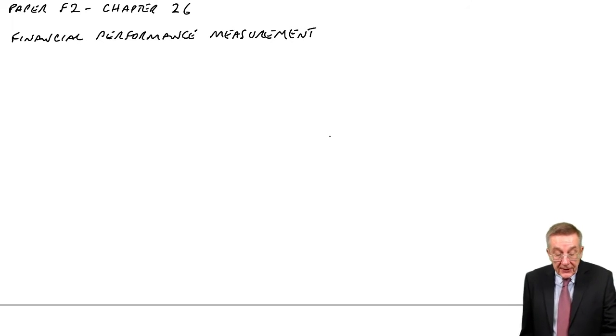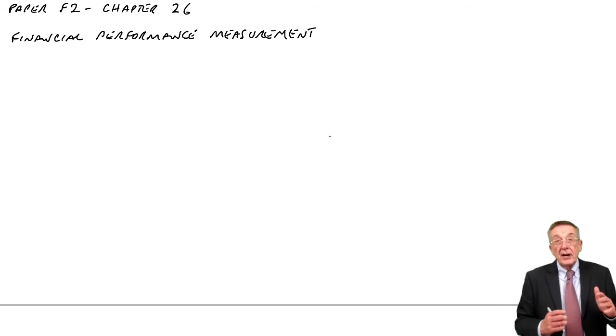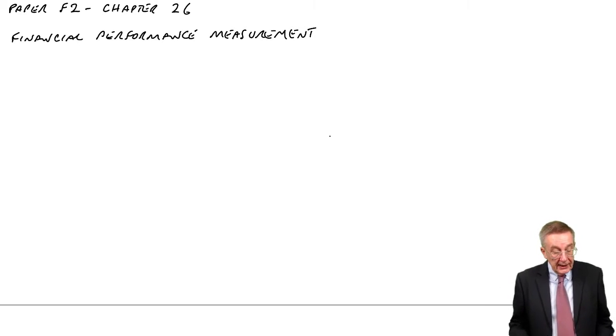31st December 2007, which are the first two columns, and 31st December 2006, which are the second two columns. So we've got this year and last year. And I've also given you the income statement or the statement of profit or loss for the two years.